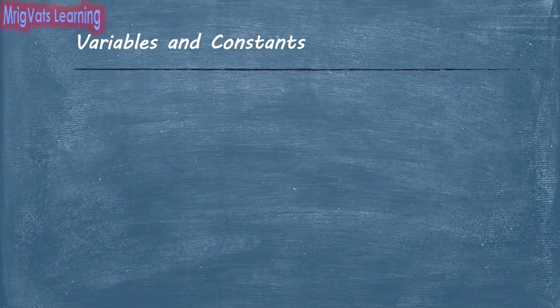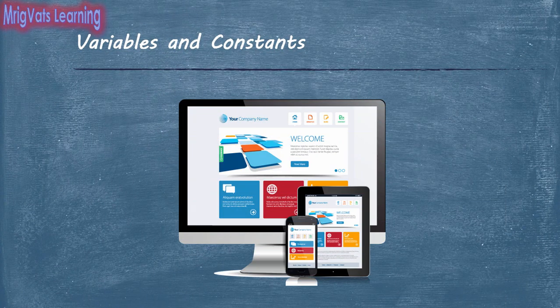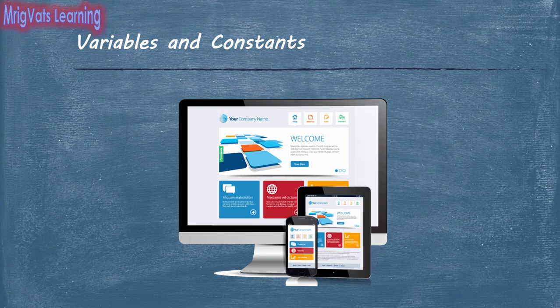Similarly, on a website, the information about an organization changes once in a while. Such information is displayed in the form of a constant. In the last video, you saw an example of displaying a constant value in a program.